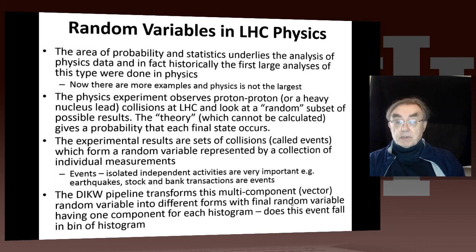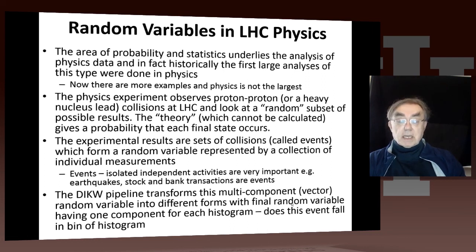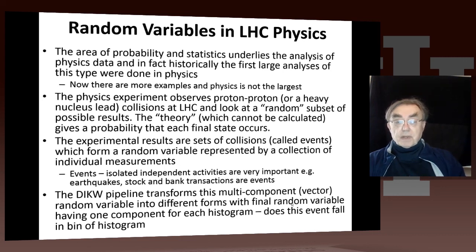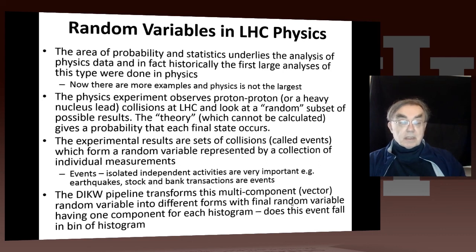So we have these collisions, which are all random, and we have results — the results are actually caught events. These are very complicated events because they record everything that happened in the collision. They represent a random variable which is a sort of vector, because there are lots of results. That vector has a different length on every collision, because you produce a different number and type of final state particles on every collision. Of course, such events — which are isolated independent activities — are very important. Earthquakes, stock transactions, and bank transactions are also other types of important events.